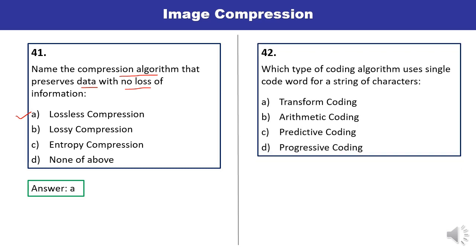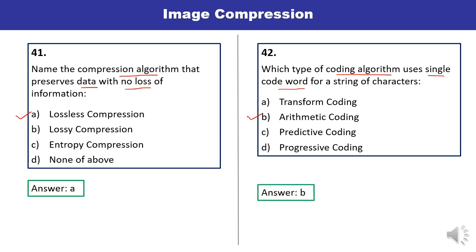Question 42: Which type of coding algorithm uses a single codeword for a string of characters? This is the correct answer.